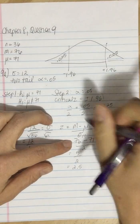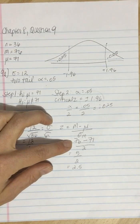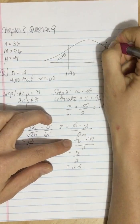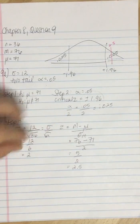That gives me 5 divided by 2, which gives me 2.5. 2.5 falls out here, so it's more extreme.